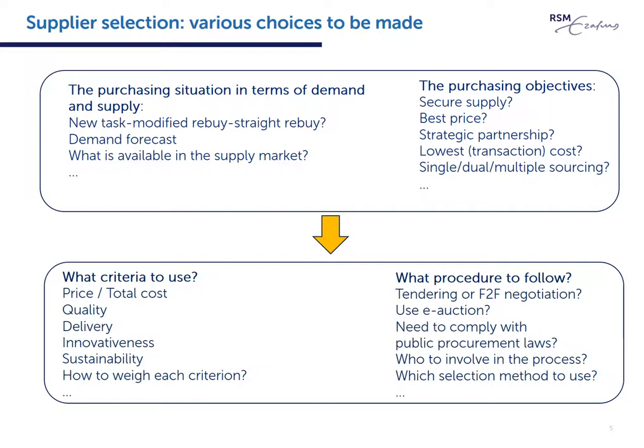When starting a supplier selection process, various choices need to be made. In some of these choices, the purchasing department may be in the lead. But purchasing and supply management is essentially a cross-functional business process. There are two main areas in which choices need to be made: which criteria to apply, and which tendering and selection procedures to follow. Beil refers to studies that have identified price, quality, and delivery as the most prevalent criteria in supplier selection, but other criteria apply as well — innovativeness, sustainability.